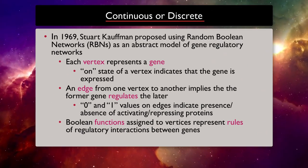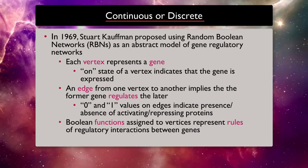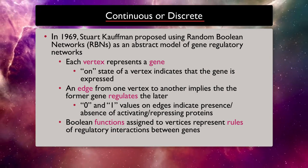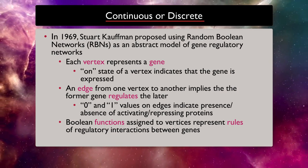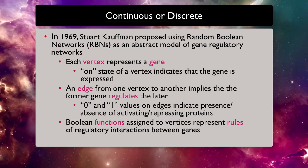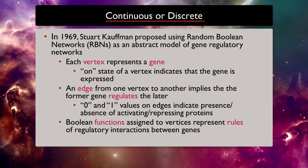In 1969, Stuart Kauffman proposed using random boolean networks as an abstract model of gene regulatory networks, where each vertex or node represents a gene and the state of a vertex indicates that the gene is expressed.